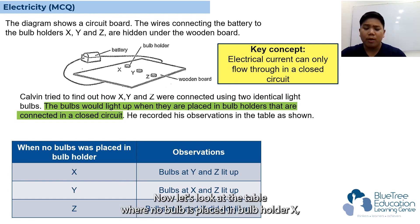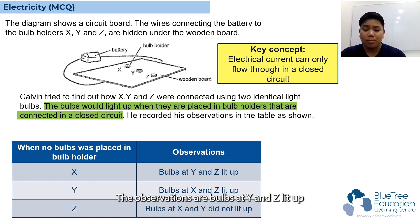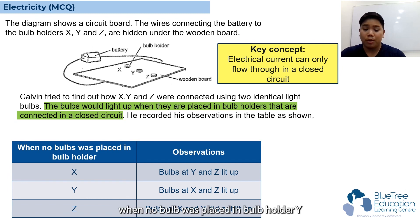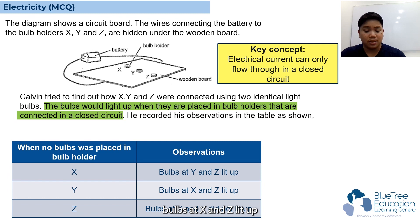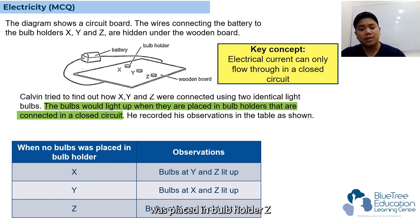When no bulb was placed in bulb holder X, the observations are bulbs at Y and Z lit up. When no bulb was placed in bulb holder Y, bulbs at X and Z lit up. Finally, when no bulb was placed in bulb holder Z, the bulbs at X and Y did not light up.